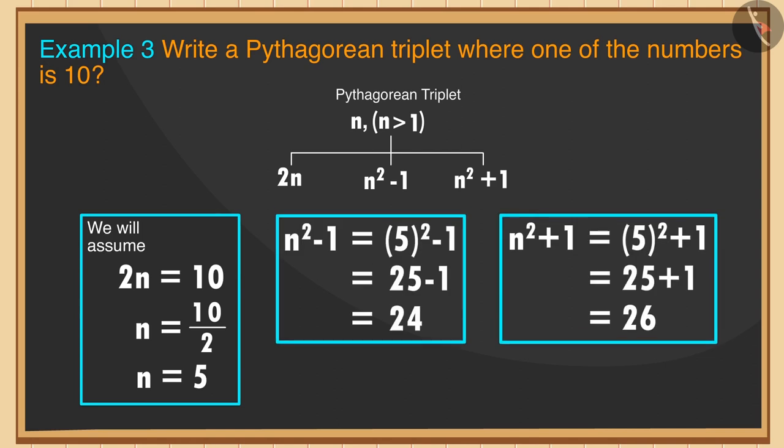Solving it further, we will get numbers 24 and 26. Therefore, the Pythagorean triplet numbers will be 10, 24, and 26.